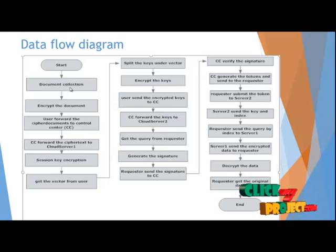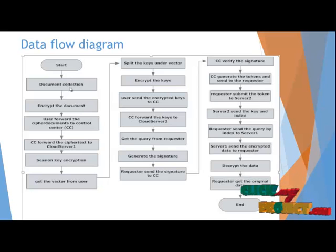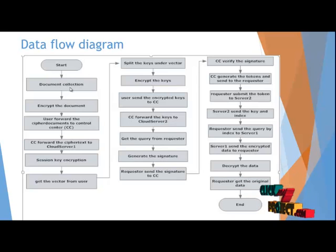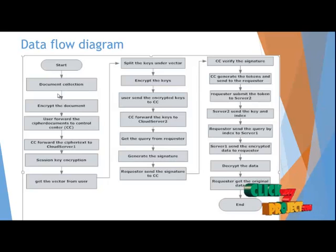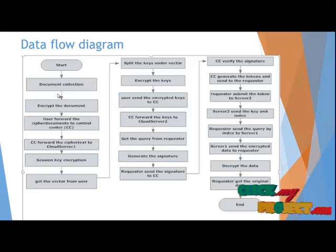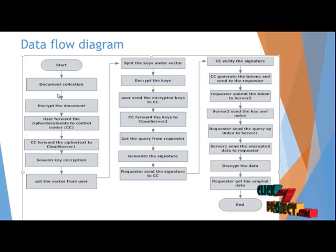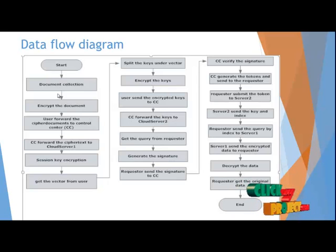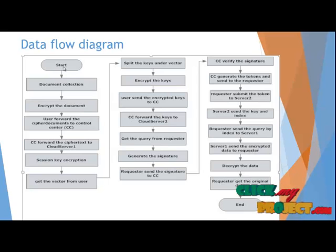Next, the second process is Session Key Encryption. In Session Key Encryption, we perform using the Hidden Encryption Vector Algorithm. Next, the user gets the vector from the user, splits the keys under the vector, then encrypts the keys using the HVE Algorithm — Hidden Vector Encryption Algorithm. The user sends the encrypted keys to the Control Center, and then the Control Center forwards the keys to Cloud Server 2.